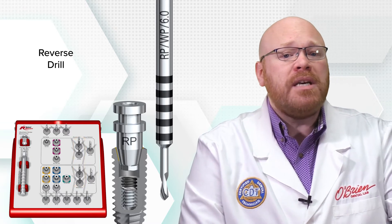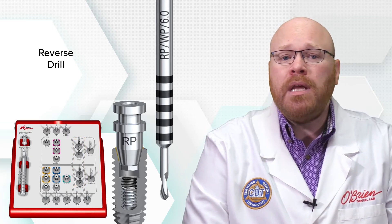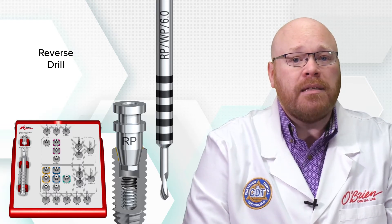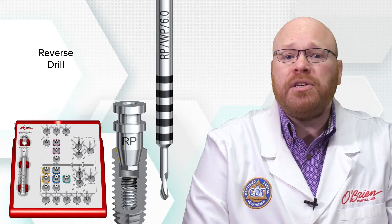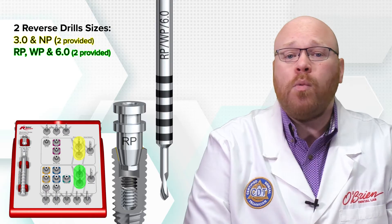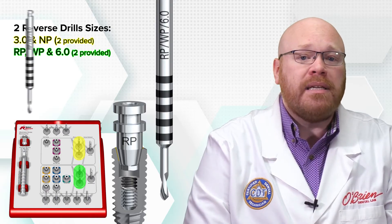Now if the screw you're removing just has a stripped head and isn't broken, you won't need to use the drill guide and instead will use the reverse drill freehand. There are two reverse drills to use, one that works for the 3.0 and narrow platform implants and the other that works for the regular, wide, and 6.0 platform implants.